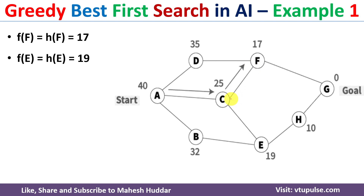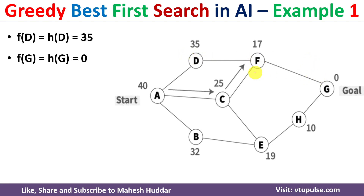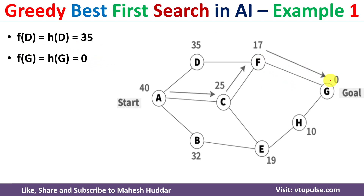From F, we need to find the path that leads to the goal node. From F, there are two possible paths: towards D and towards G. We calculate the f values: f(D) = h(D) = 35, and f(G) = h(G) = 0. Between f(G) and f(D), f(G) has the minimum value, so we select the path from F to G.